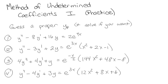Here we're going to look at method of undetermined coefficients. We're just doing the practice — we did the theory in a different video, just to keep things separate. I'm calling it coefficients 1 because in part 2 we're going to do sines and cosines, but in this one there's no sines and cosines allowed. The idea is to get a good particular solution guess for all of these.